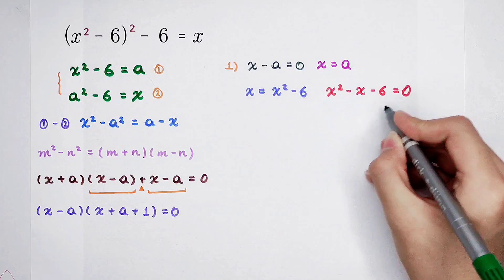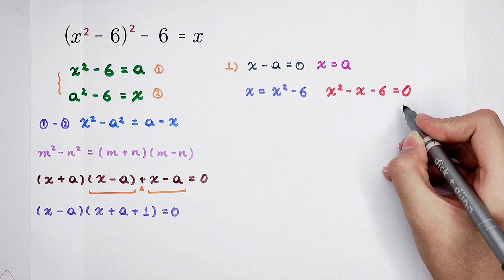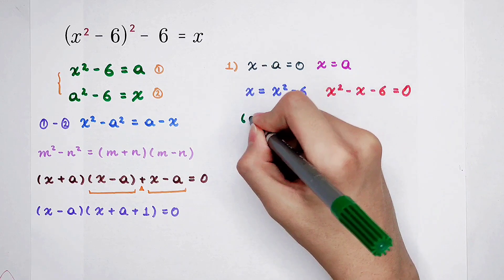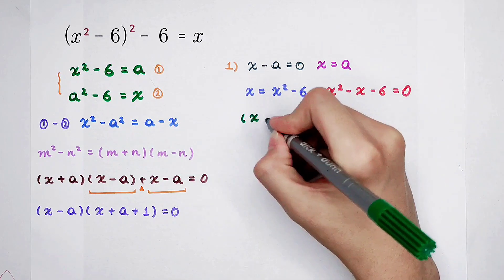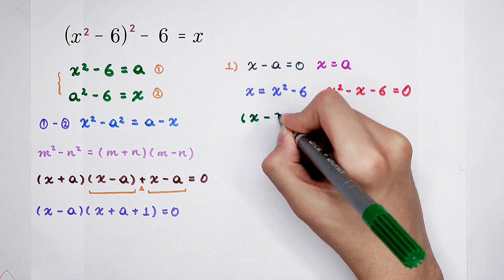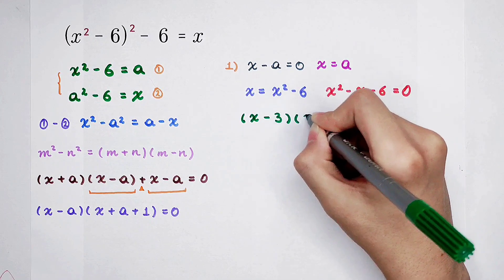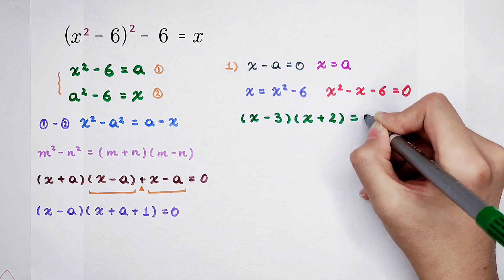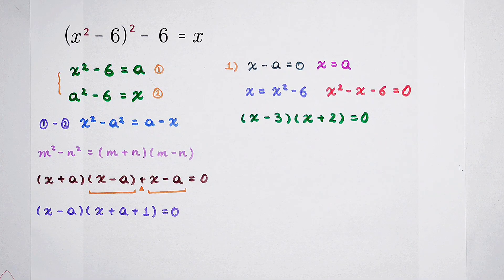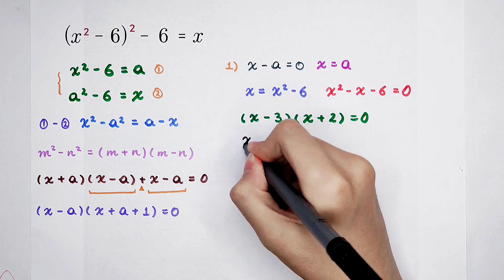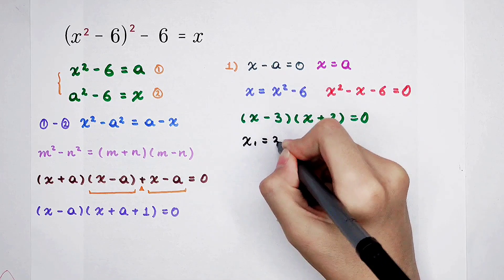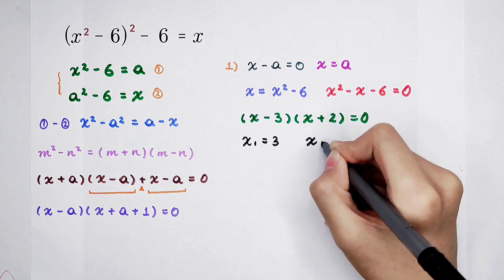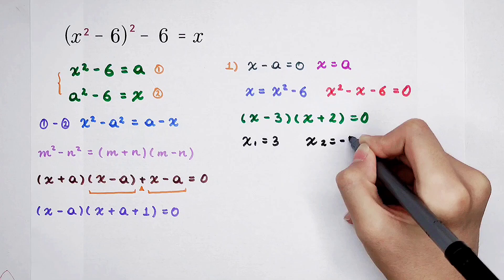x minus 3, and then times x plus 2 is zero. Very good! x1 is 3, and x2 is negative 2.